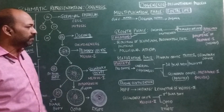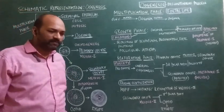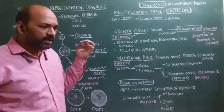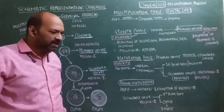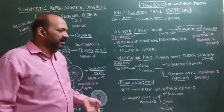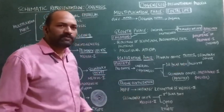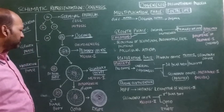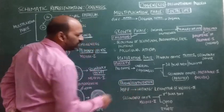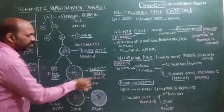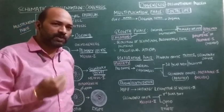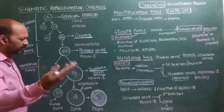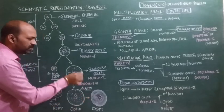The secondary oocyte formed under hormonal influence gets arrested at metaphase II, due to lack of a maturation promoting factor. This secondary oocyte is ovulated on the fourteenth day of the menstrual cycle. If fertilization occurs and the sperm enters the secondary oocyte, the arrest is relieved.